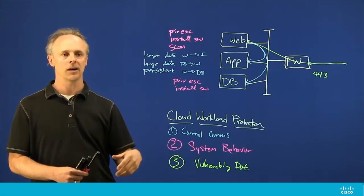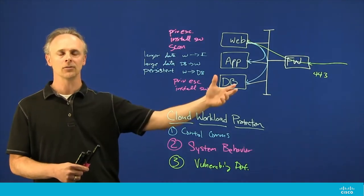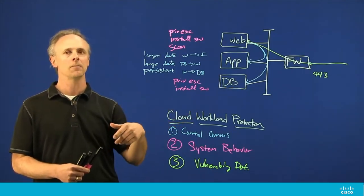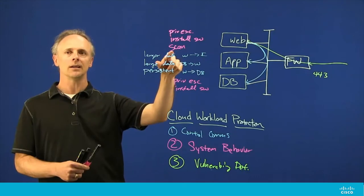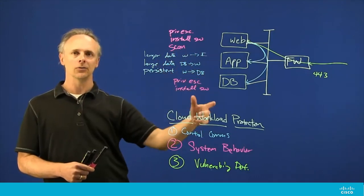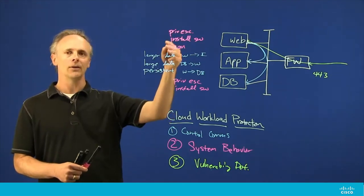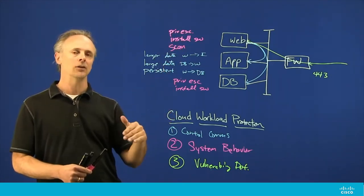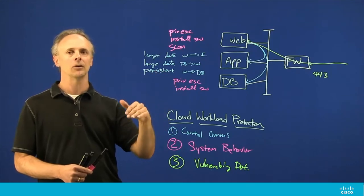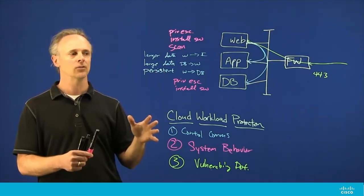When we initiate a scan and look for other nodes on that network, we are actually opening up or creating a TCP port. All three of these things can be noticed and actually alerted on and recorded by Tetration when we have a software sensor in place.